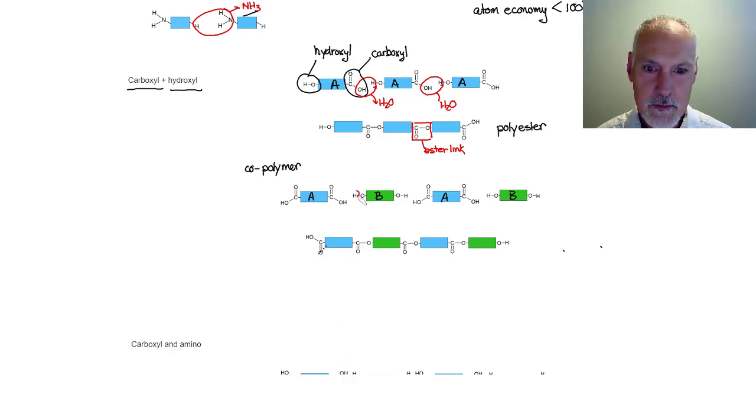I'm going to remove a water molecule there, there, and there, giving me the structure that you see below. It is still an example of a polyester. However, you'll notice the alternating pattern of the groups that I've joined.